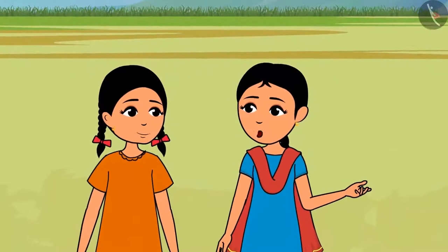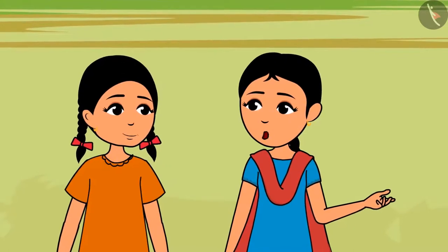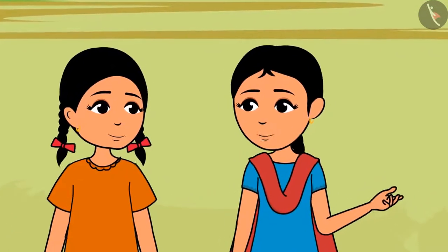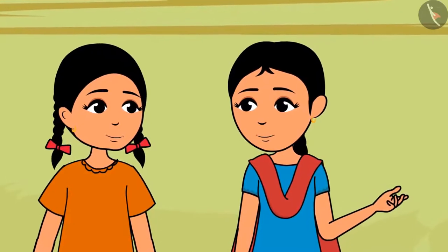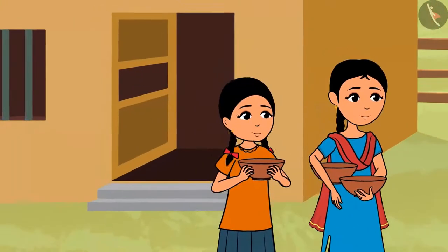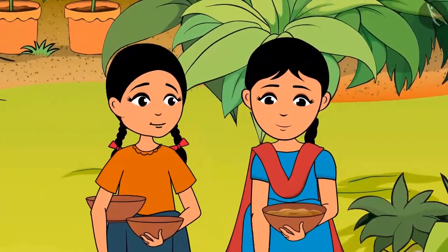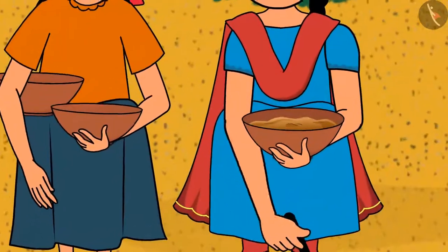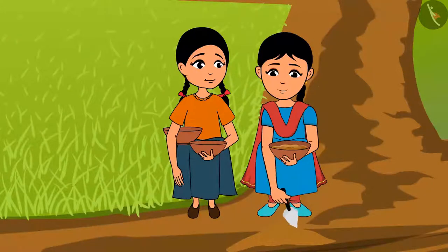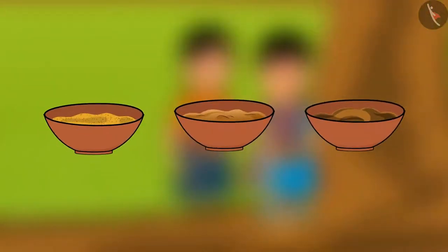Neeloo suggests: 'Come Minu, let us do an experiment. Let us take soil from three different places, put water in it, and observe what happens.' Minu and Neeloo take three utensils, walk to Ramu Kaka's garden to collect garden soil, collect some sandy soil, and take a third sample from Shankar Kaka's field. On returning home, they put the different samples in three different utensils.